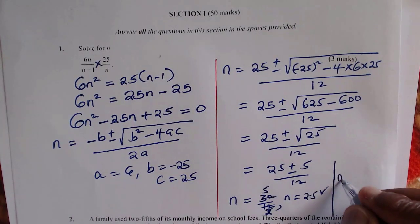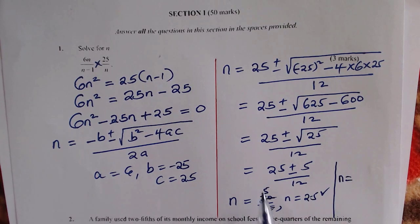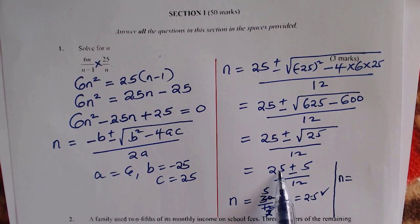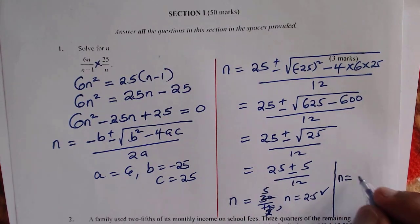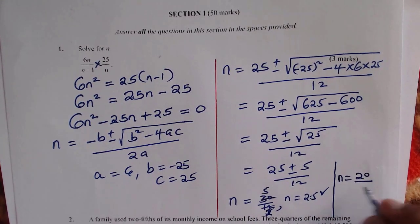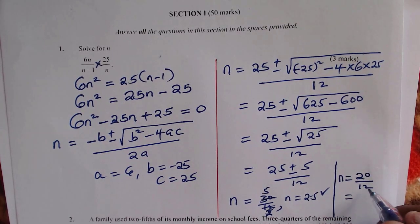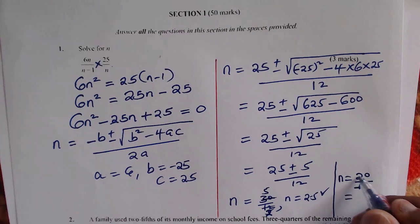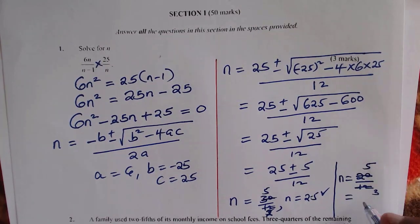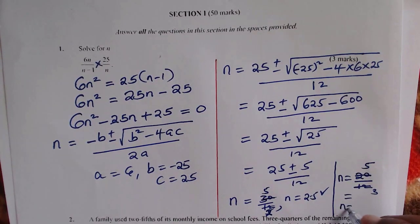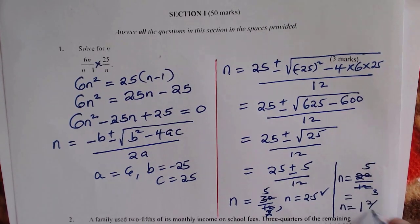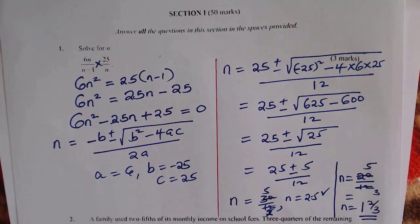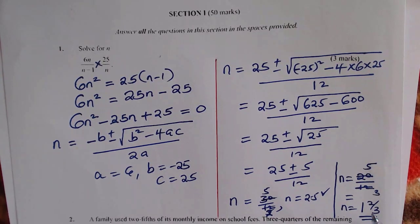The second one will be n is equal to 25 subtract. The first one we've taken 25 plus 5, and the second one will be 25 minus 5, which will give 20 divided by 12. So simplify this, 12 divided by 4 you get 3, 20 divided by 4 you get 5, so this will give n would be 1 and 2 thirds. So these are the two values: n is equal to 2.5, and n is equal to 1 and 2 thirds.